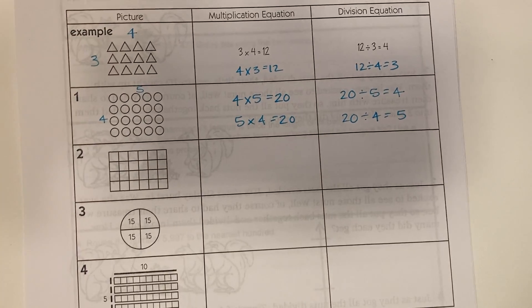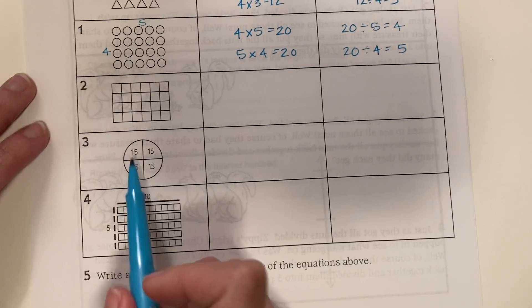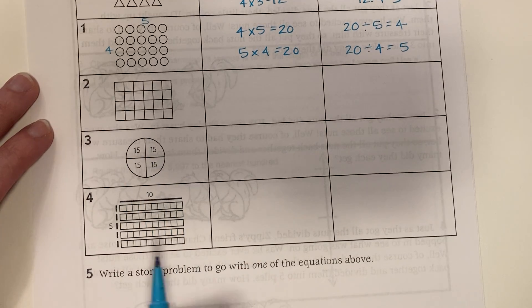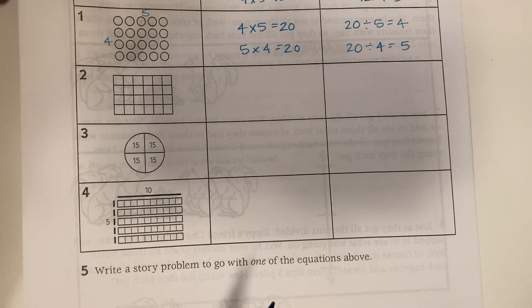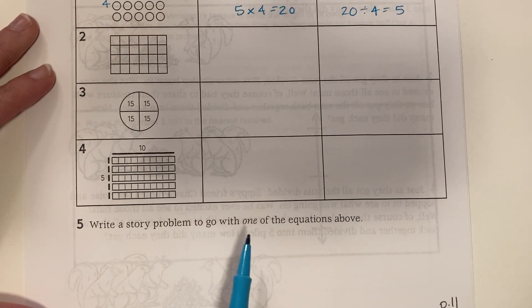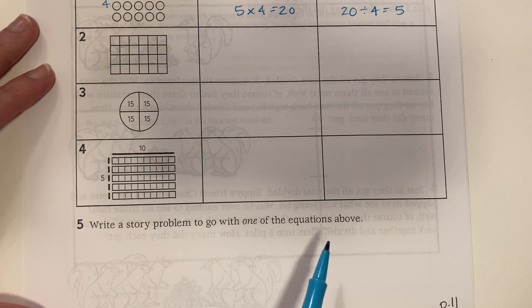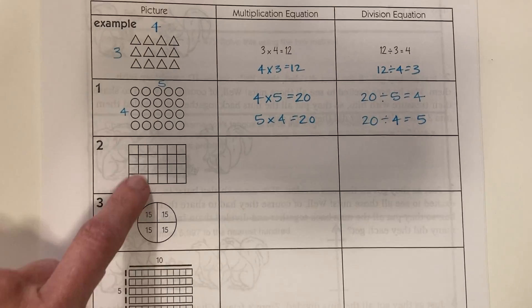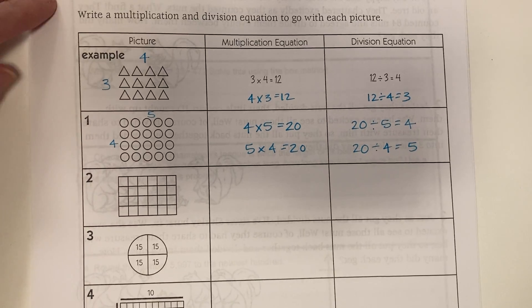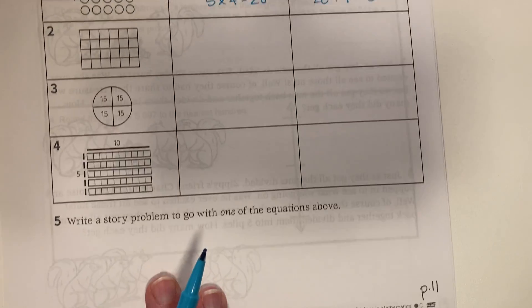Keep going with these pictures. This is 4 by 15 by the way. And then the last step is to write a story problem to go with one of the equations above. So just pick one of these, and the example is fine too. You could choose that one to write a quick story problem with.